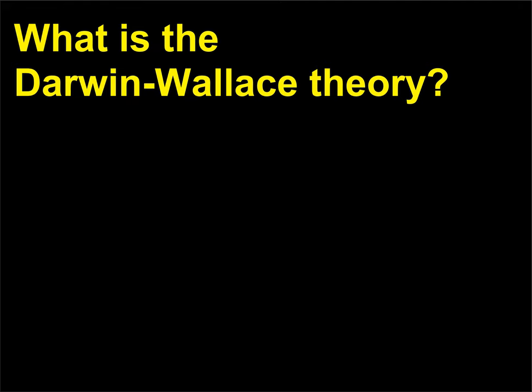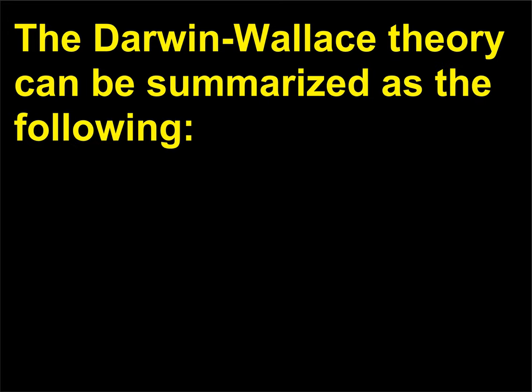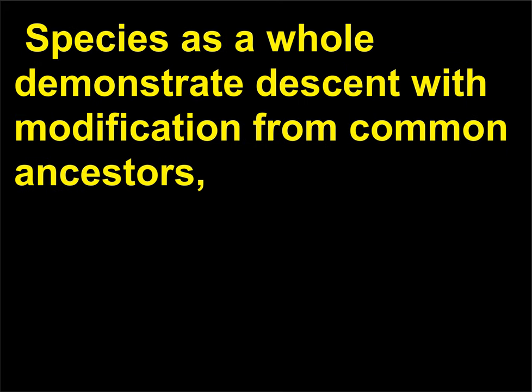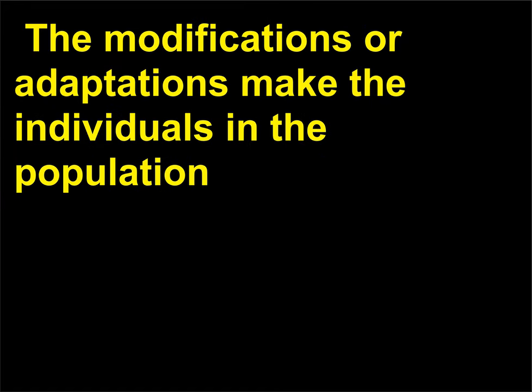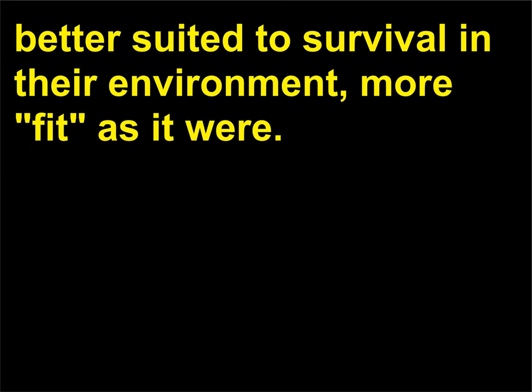What is the Darwin-Wallace theory? The Darwin-Wallace theory can be summarized as follows: species as a whole demonstrate descent with modification from common ancestors, and natural selection is the sum of the environmental forces that drive those modifications. The modifications or adaptations make the individuals in the population better suited to survival in their environment — more fit, as it were.